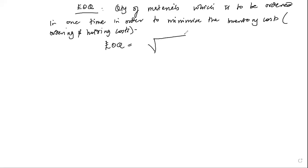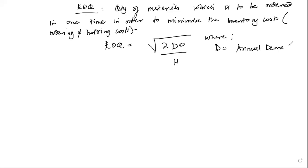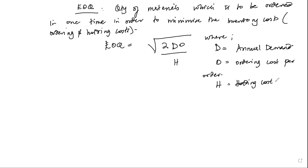The formula for calculating EOQ is: EOQ = √(2DO/H). In this formula, D represents the annual demand, O is the ordering cost per order — the cost you incur to make one order — and H represents the holding cost per unit.